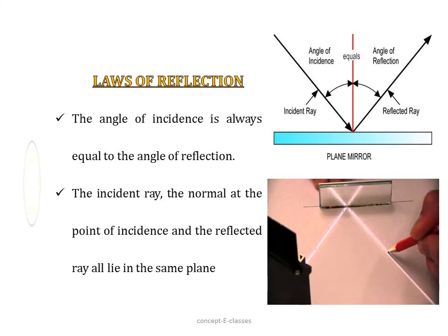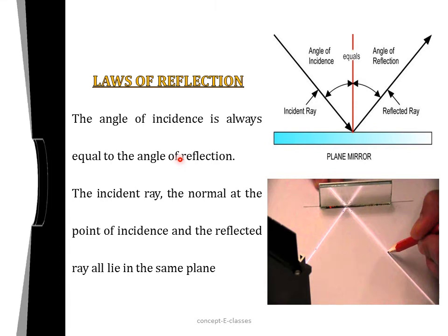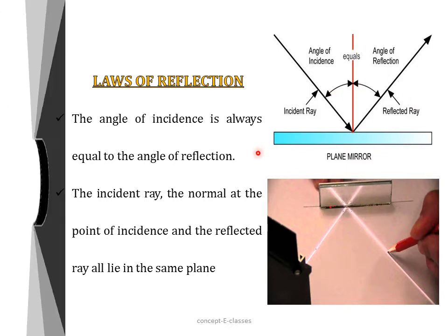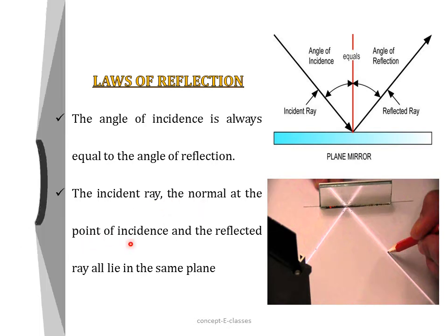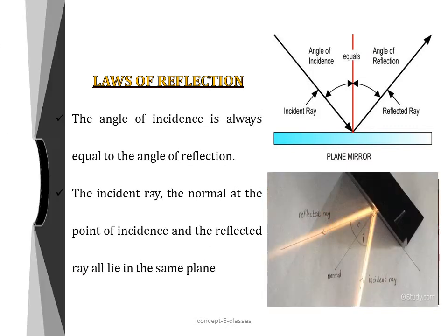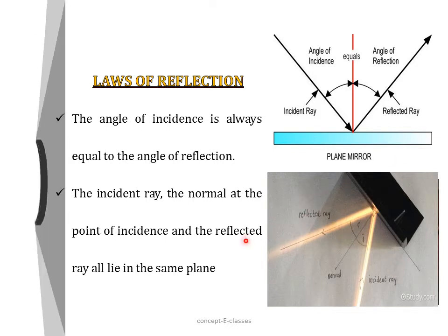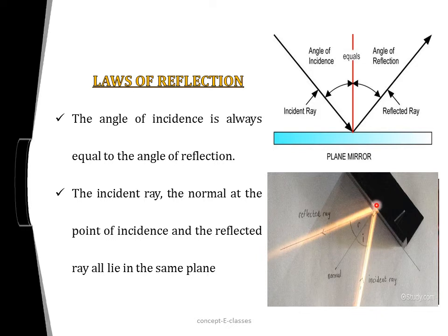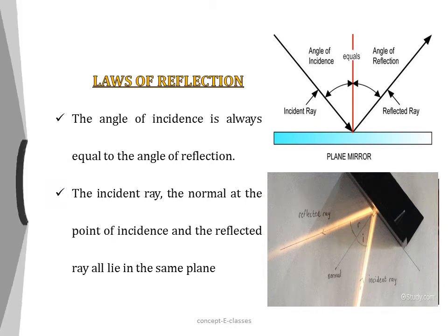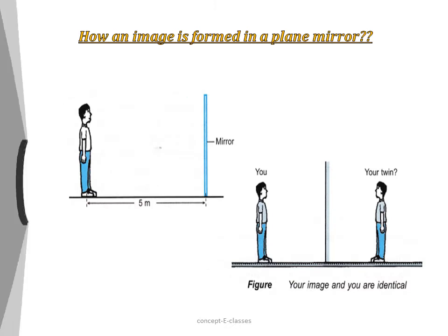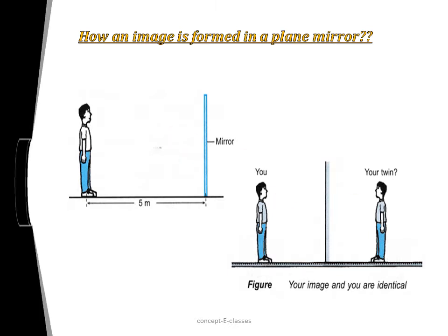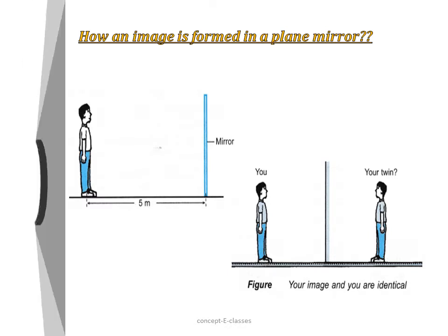The first law of reflection states that the angle of incidence is always equal to the angle of reflection — if the angle of incidence is 60°, then the angle of reflection is also 60°. The second law states that the incident ray, the normal at the point of incidence, and the reflected ray all lie in the same plane. When a ray of light falls on a mirror and reflects back, we can see our own reflection when standing in front of it.